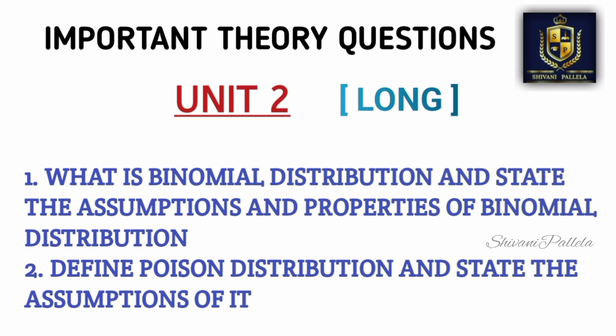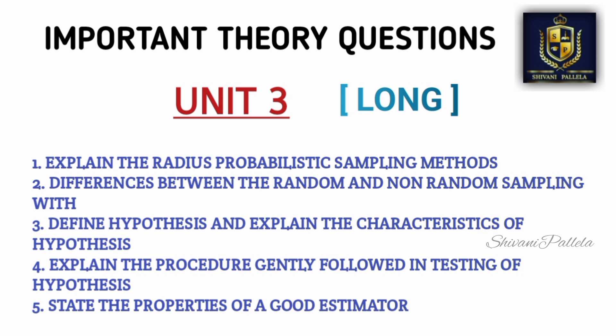From Unit 2, the important theory questions are: Binomial Distribution — assumptions and properties, and Poisson Distribution and its assumptions. Mostly you will get a problematic in this unit. I am not assured that only problematic or only theory will come — I will not assure anything. It's up to you. I will give both important theory and problematic questions.